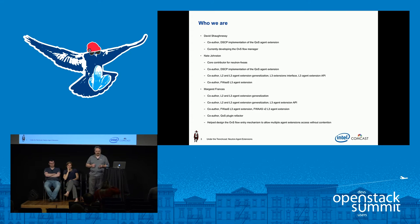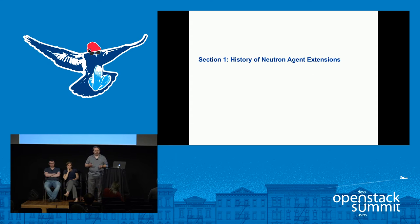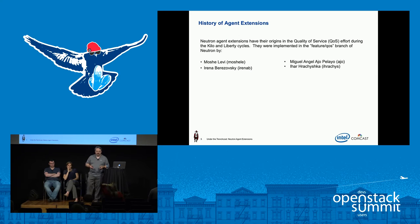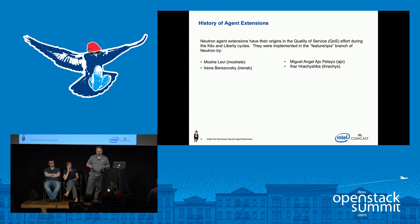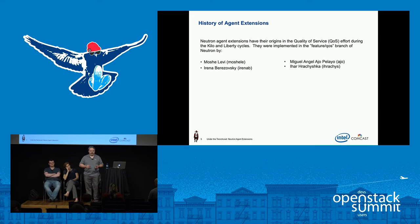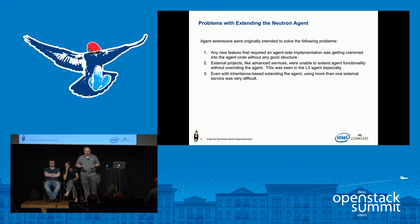I'd like to start by talking about the history of neutron agent extensions. They have their origins in the quality of service effort in the Kilo and Liberty cycles. It took a lot of engineering and a while to implement. They were implemented in a separate feature branch — the QoS quality of service feature branch in neutron — by Moshe Levy, Irina Berezovsky, Miguel Angel Ajo Playao, and Hirasika.